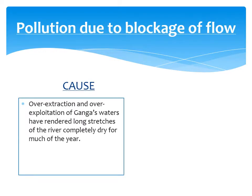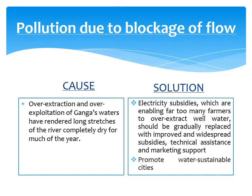Pollution due to blockage of flow: Overextraction and overexploitation of Ganga's water have rendered long stretches of the river completely dry for much of the year. Solution: Electricity subsidies that enable far too many farmers to overextract well water should be gradually replaced with improved and widespread subsidies, technical assistance, and marketing support. Promoting water-sustainable cities is also recommended.